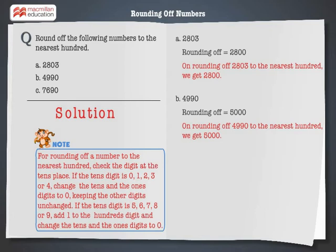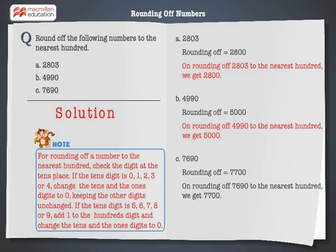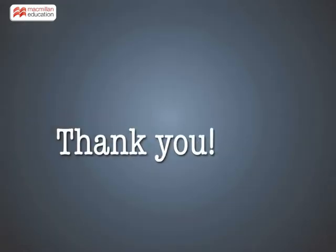Finally, let's solve the last problem: 7,690. Here, the digit at the tens place is 9. Hence, add 1 to the hundreds digit and change the tens and the ones digit to 0. On rounding off 7,690 to the nearest hundred, we get 7,700.